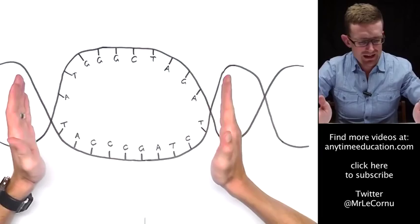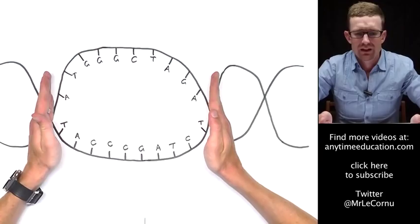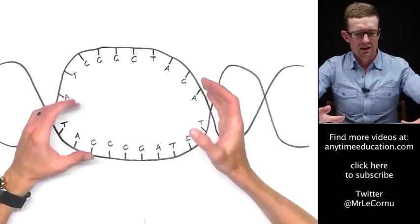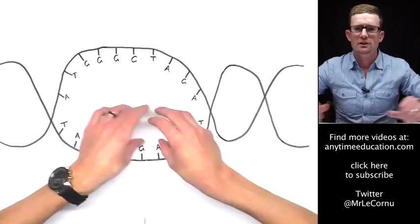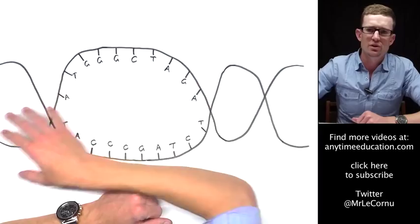In transcription, all that's happening is the DNA is unzipping just at the area where the gene is located, and then at the end of the process, once we've made our messenger RNA, the DNA double helix is going to close back up again and nothing will have happened to the original DNA molecule.